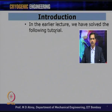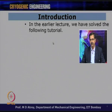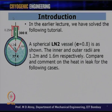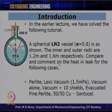In the earlier lecture, we solved the following tutorial. We had a 77 K liquid nitrogen bath inside and 300 K outside, with a small spherical cryostat of 1.6 meter outside diameter and 1.2 meter inside diameter. We calculated the heat in leak due to the insulation material, neglecting neck conduction. The problem compared insulation cases for a spherical LN2 vessel with emissivity of 0.8.